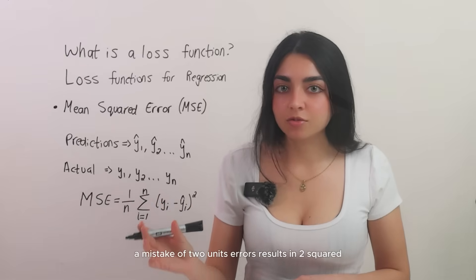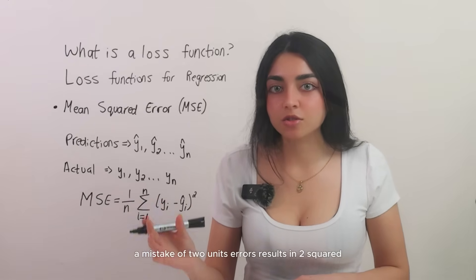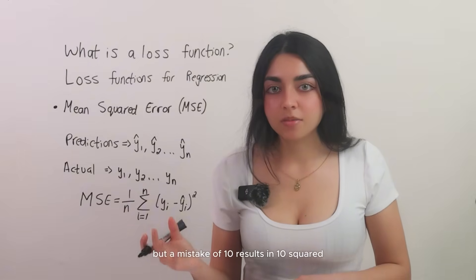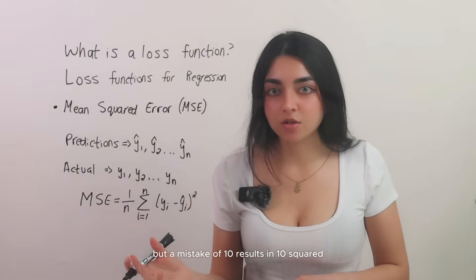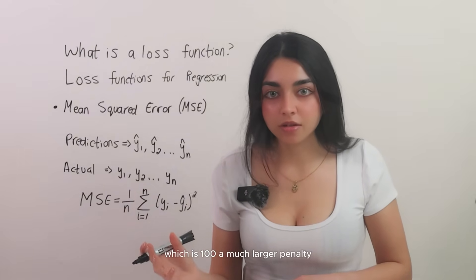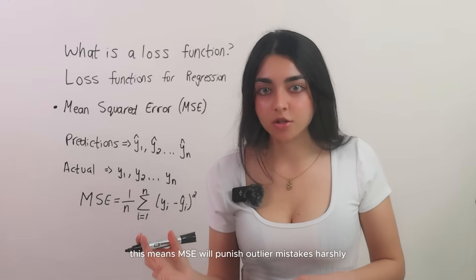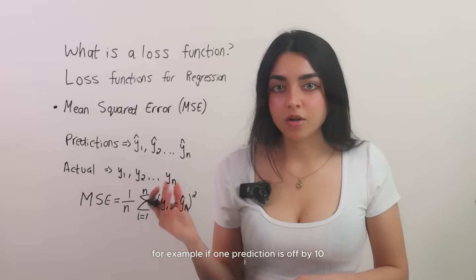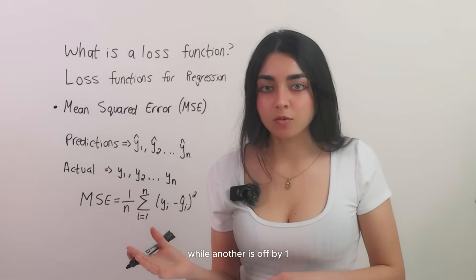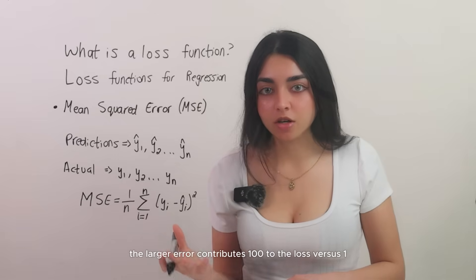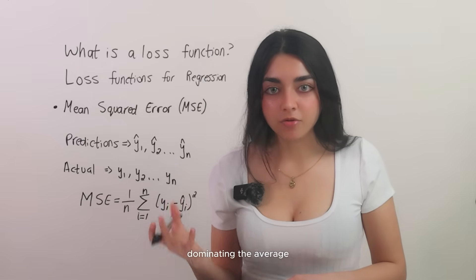For example, a mistake of two units errors results in 2 squared, which is 4, squared error. But a mistake of 10 results in 10 squared, which is 100, a much larger penalty. This means MSE will punish outlier mistakes harshly. For example, if one prediction is off by 10 while another is off by 1, the larger error contributes 100 to the loss versus 1, dominating the average.